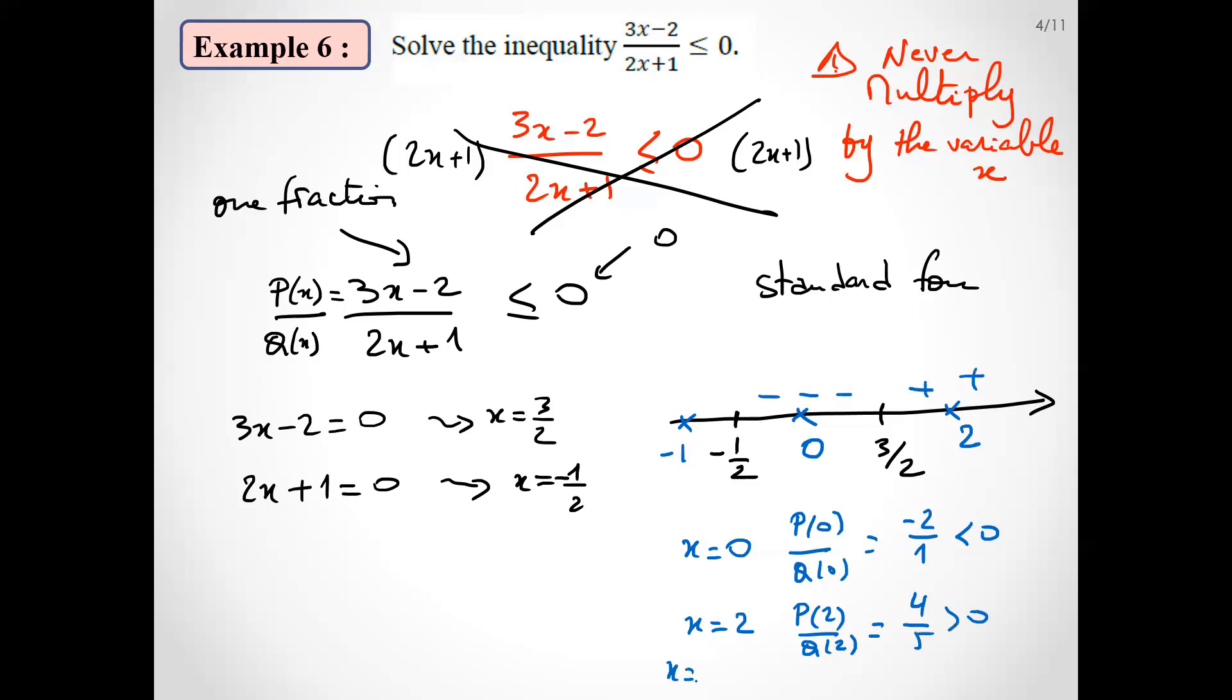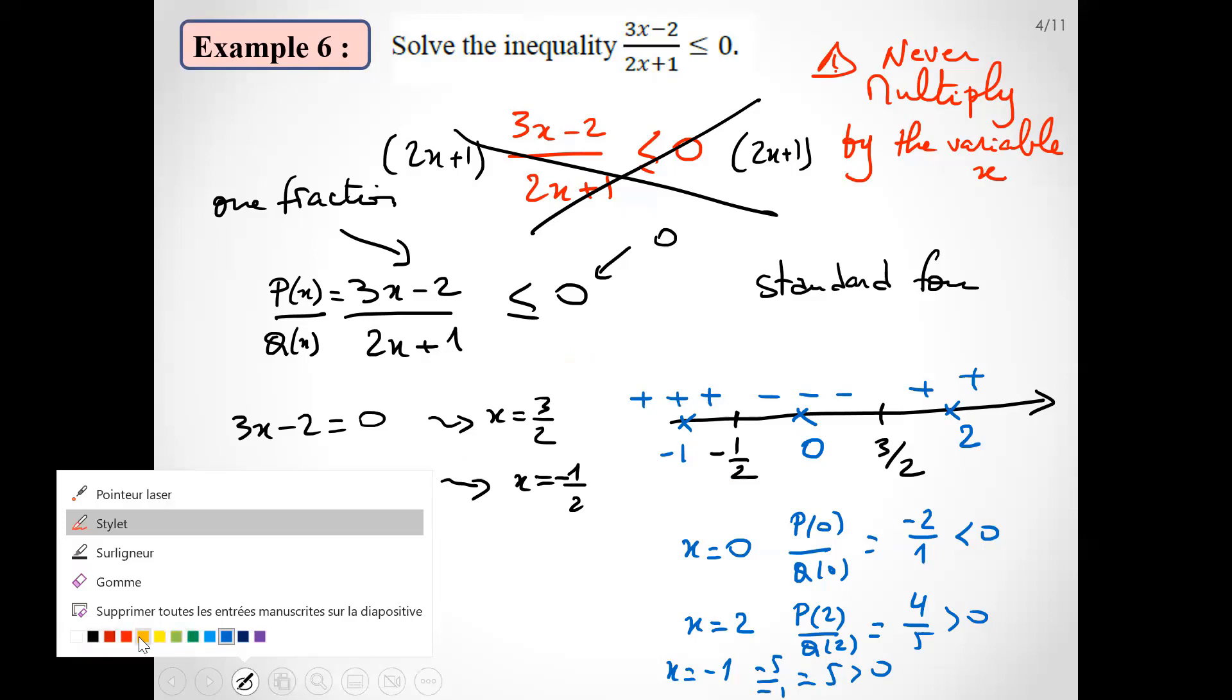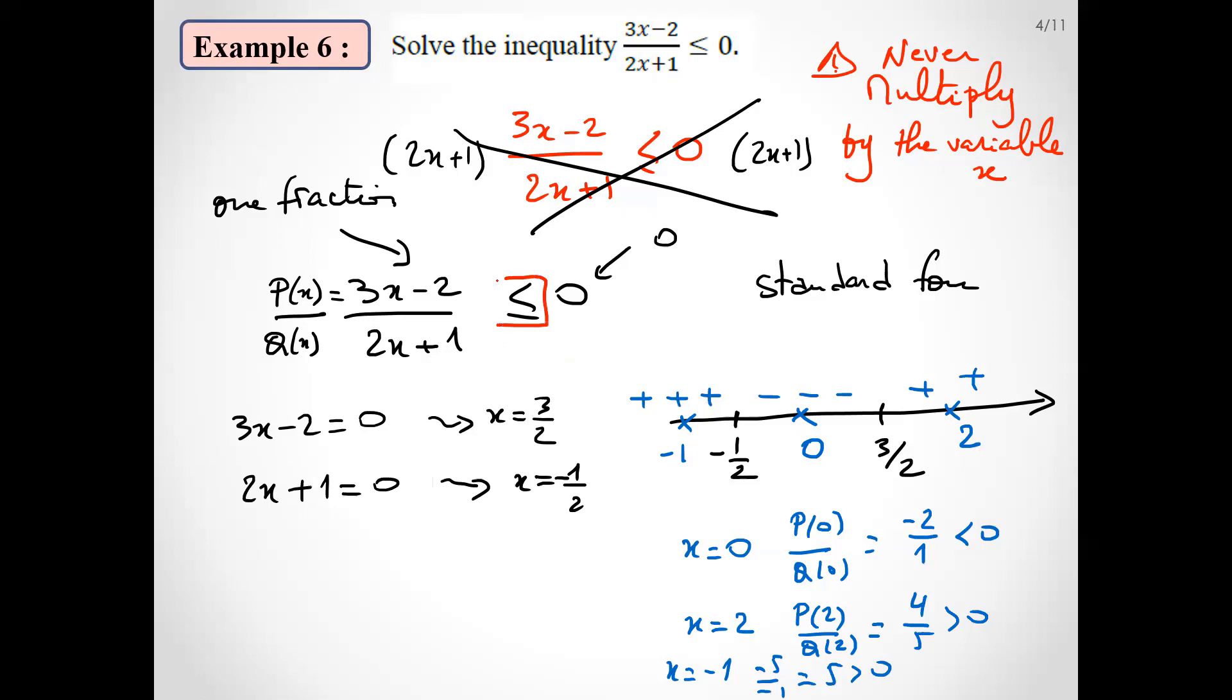For x equals minus 1, we obtain minus 5 over minus 1, so 5, it's also positive. The question is to find the value of x which makes this inequality negative, less than or equal to zero, non-positive. So we need this piece. It's closed normally.